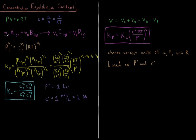Looking at our prototypical reaction, we have νA times A plus νB times B as reactants, with stoichiometric coefficients νA and νB, both in the gas phase. We produce products C and D each with stoichiometric coefficients νC and νD, also both in the gas phase.